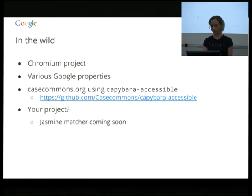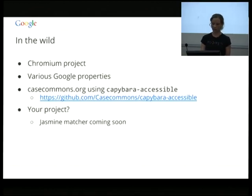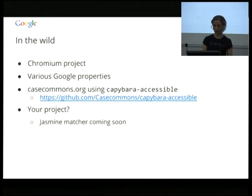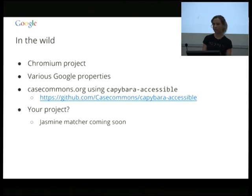This library is used in the wild. Firstly, it's used in the Chromium project — which is why it exists. It's also used on various Google properties. It's used by casecommons.org who've built the Capybara Accessible plugin, which allows you to run this audit as part of your Capybara testing. And there's also a Jasmine matcher coming soon. If you're using some other testing tool, the library is right there — go ahead and write your own custom matchers.